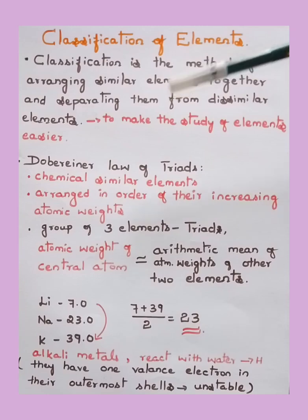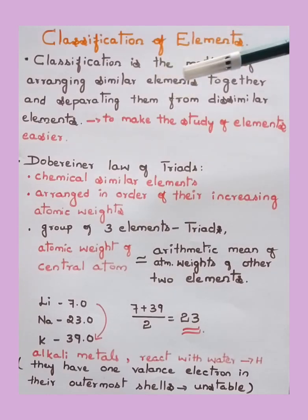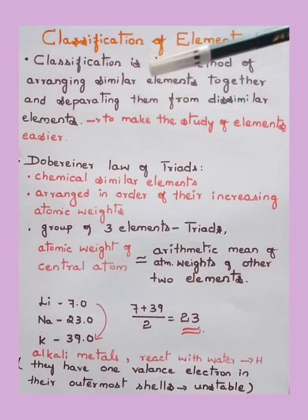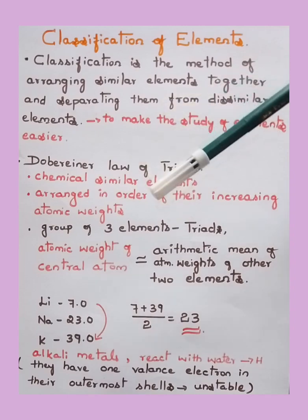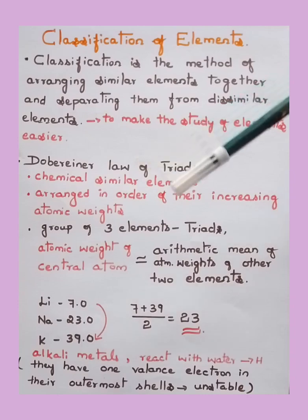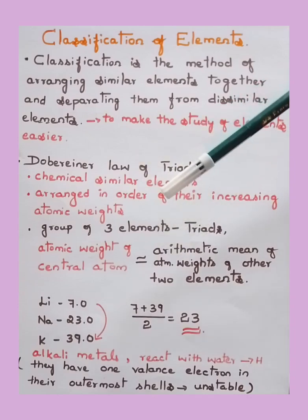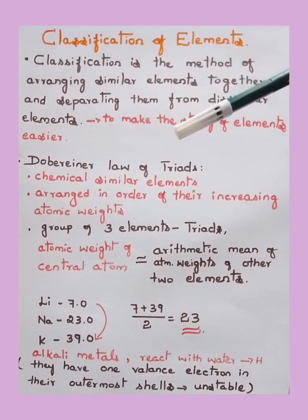Moving to the concept now: classification of elements. Classification is the method of arranging similar elements together and separating them from dissimilar elements. Although every element is different from every other element, there are some similarities amongst them. Based on those similarities and dissimilarities, elements are classified, which makes the study of elements easier.